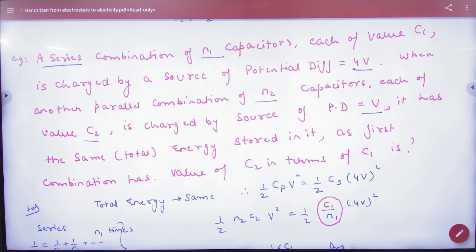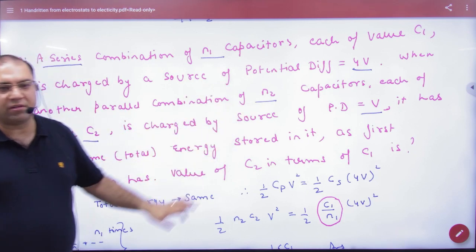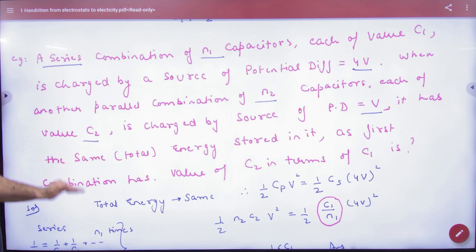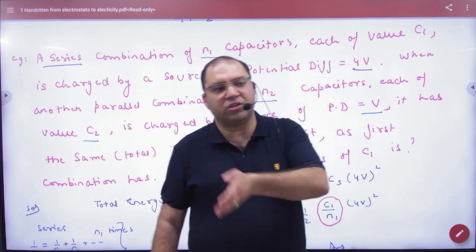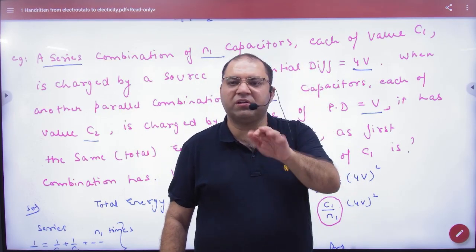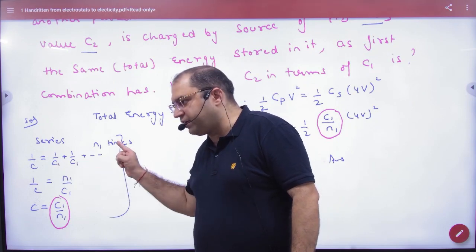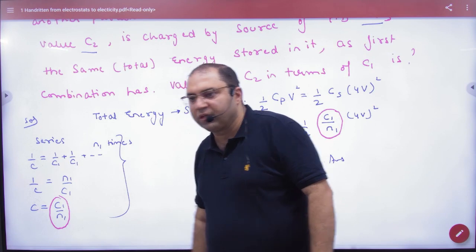Series combination of N1 capacitors, so N1 capacitor series connected, each of value C1 is charged by a source of potential difference 4V. So series में हमने कुछ capacitor लगाए और उसको चार्ज किया गया 4V volt के साथ. In series, 1 by C equals 1 by C1, 1 by C1, N1 times, N1 by C1. Cross multiply करके C आगया, so C की value clear है.